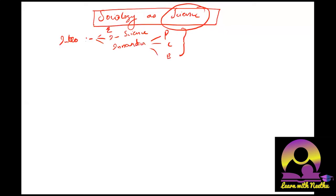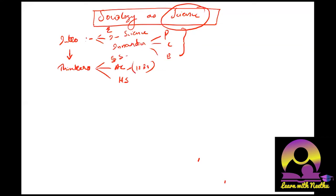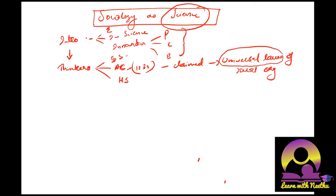Then you have to talk about three thinkers — at minimum these three, because they were the initial sociologists. We are going to talk about Saint Simon, Auguste Comte, and Herbert Spencer. Saint Simon thought about social physics. Auguste Comte, the father of sociology, in 1838 even claimed to have developed universal laws of social organization — he claimed to have made universal laws of social organization, because universal laws are what make something accepted as science.